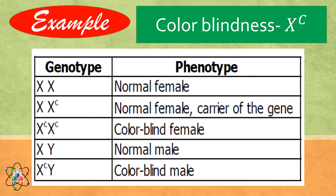She is therefore a carrier of the trait. Since males have only one X chromosome, whenever the gene for colorblindness is linked to it, then the male will be colorblind. This is the reason why colorblindness is more common in males than in females.